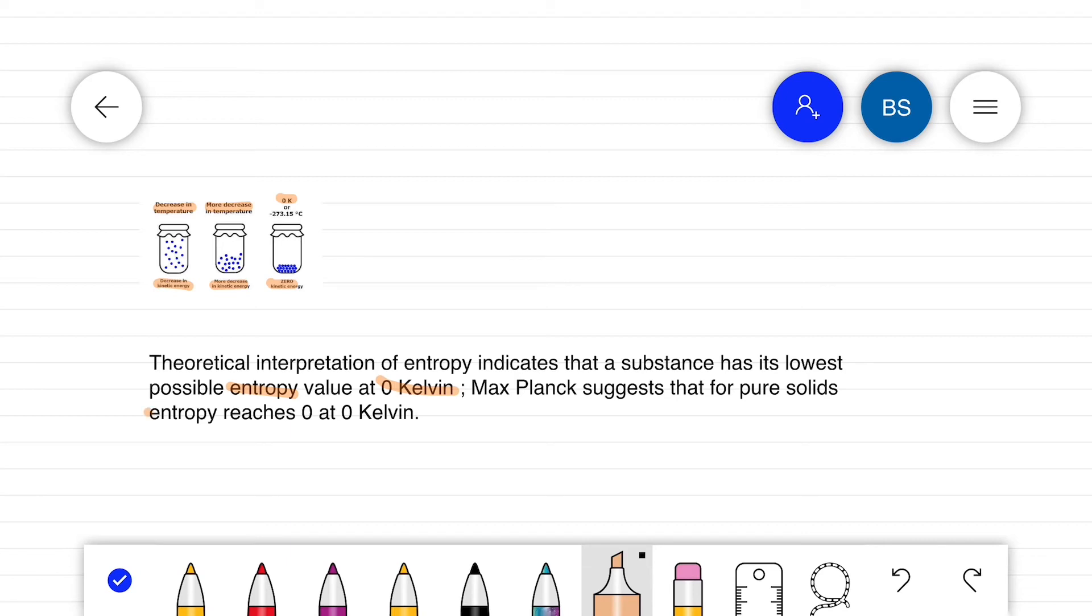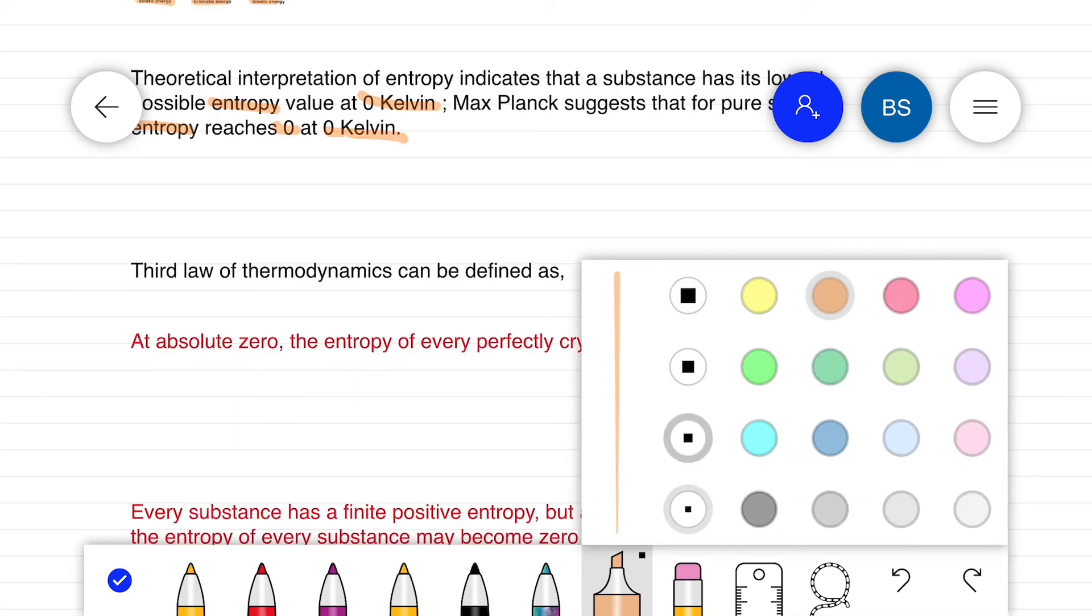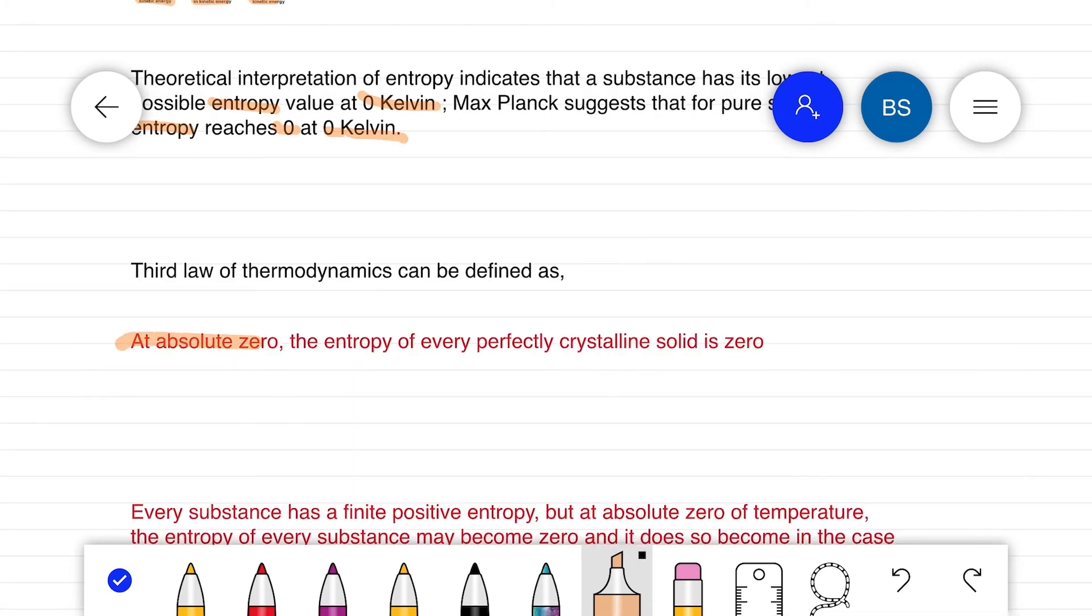That means, at zero Kelvin, the entropy of every perfectly crystalline solid will be zero. So, the third law can be stated as: at absolute zero, the entropy of every perfectly crystalline solid is zero.